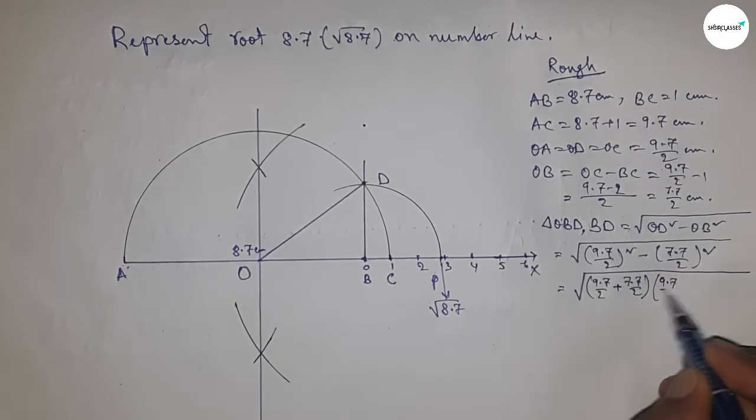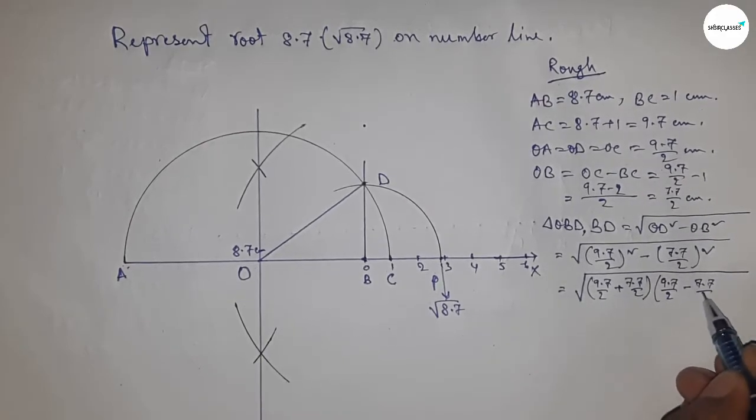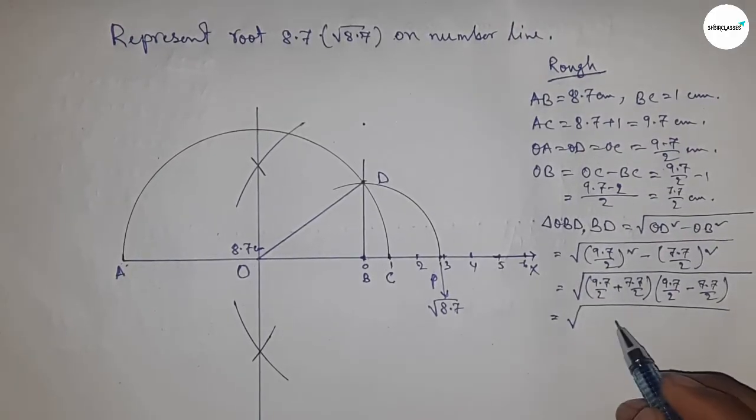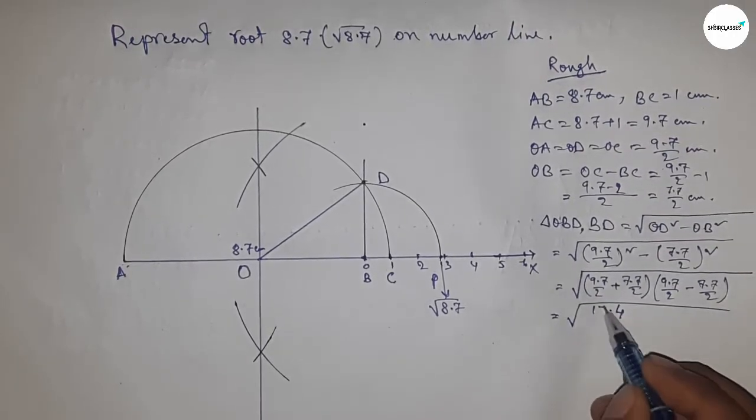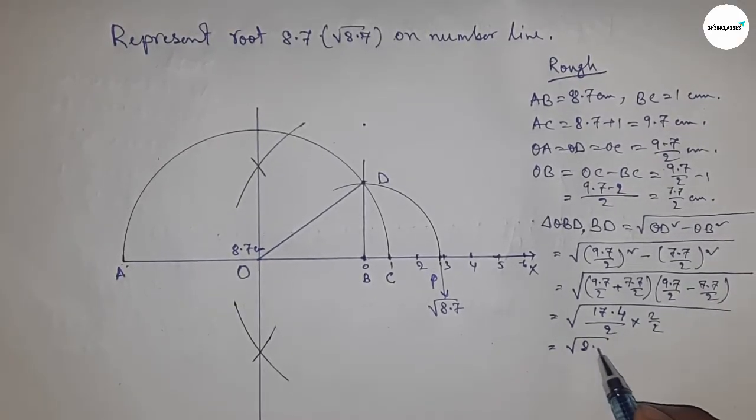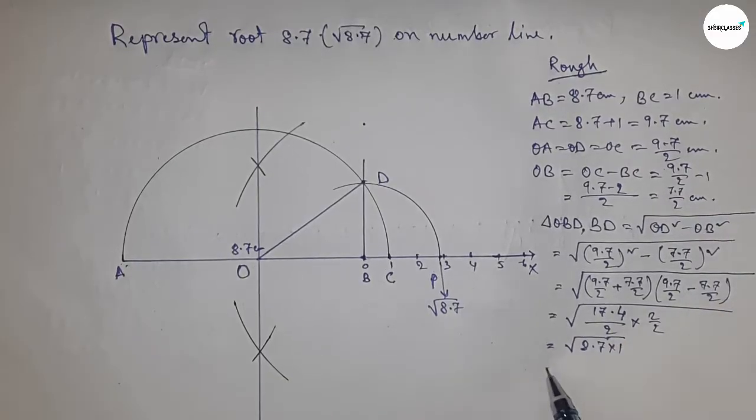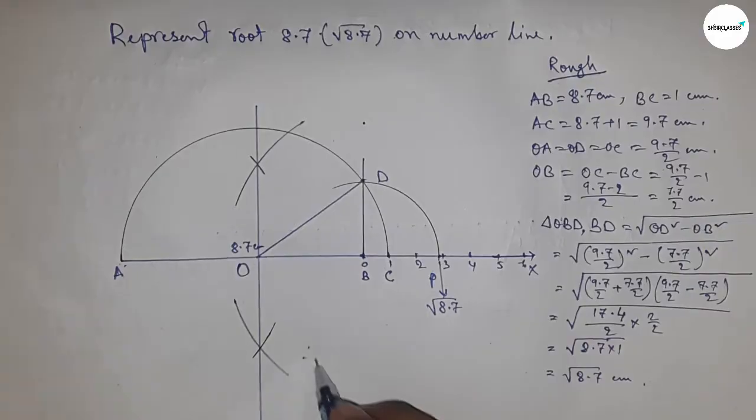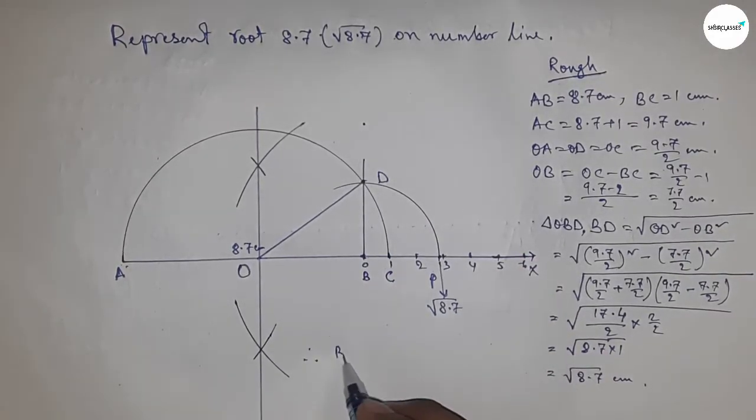From this calculation, we get 17.4 by 2 times 2 by 2, which simplifies to root 8.7 times 1, giving us root 8.7 cm. Therefore, BD and BP are equal distances, both equal to root 8.7 cm.